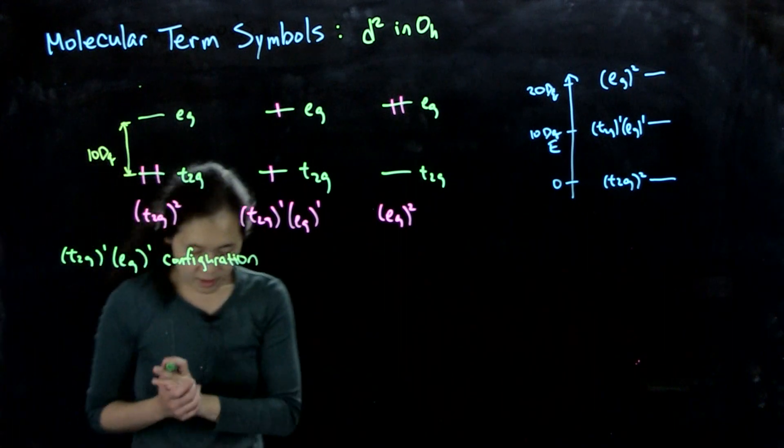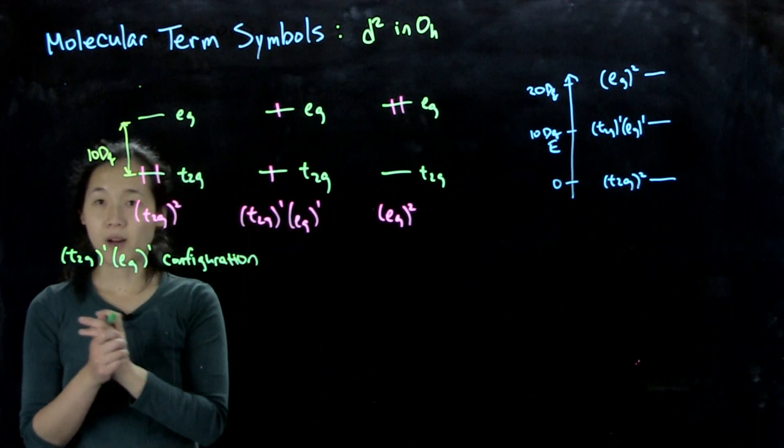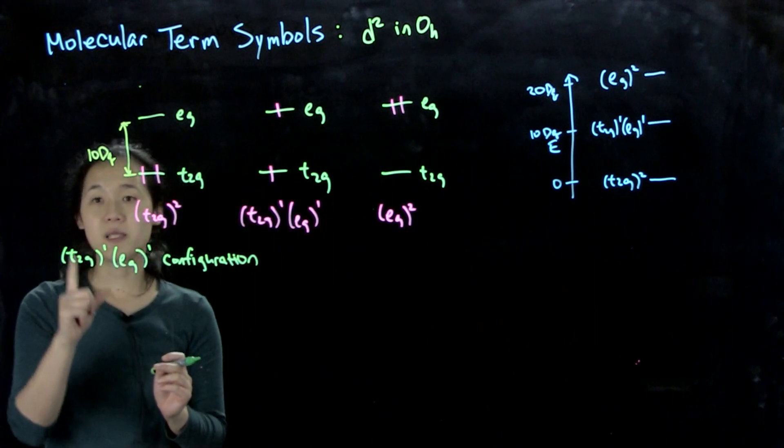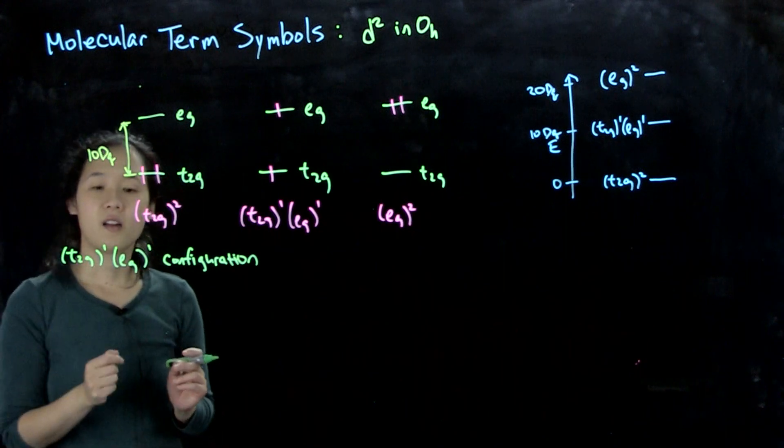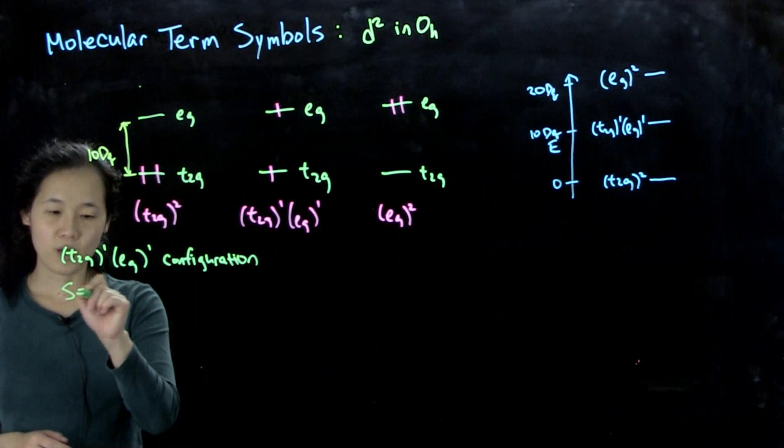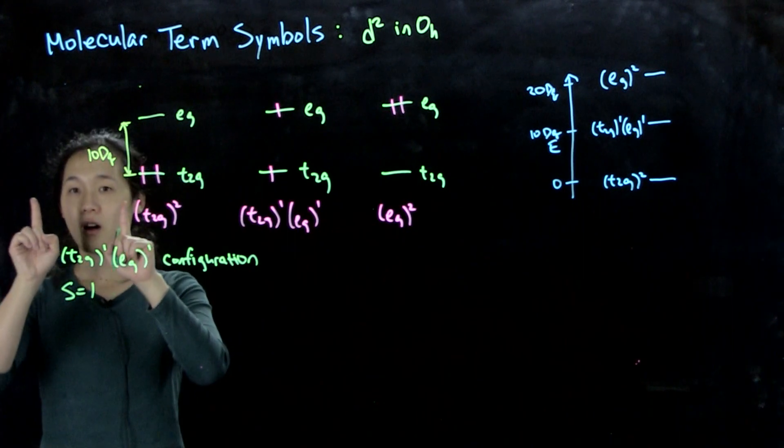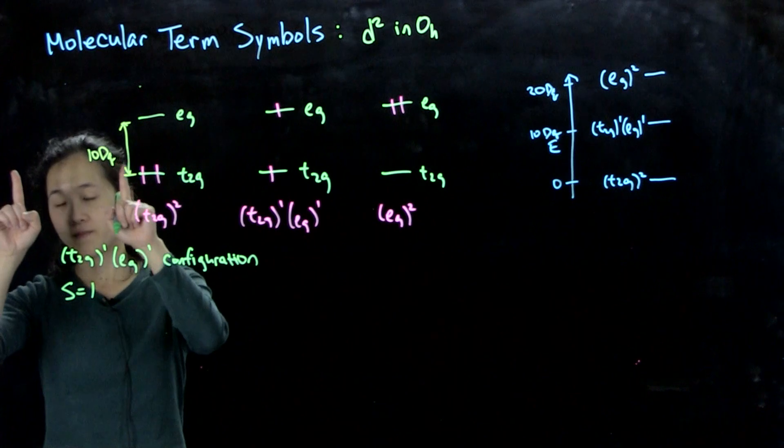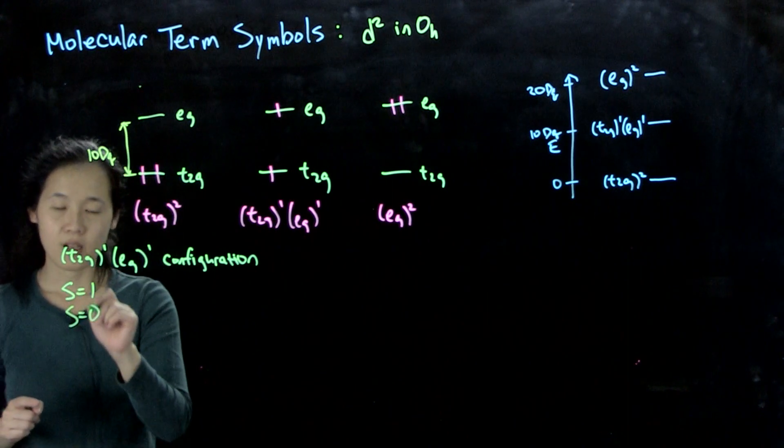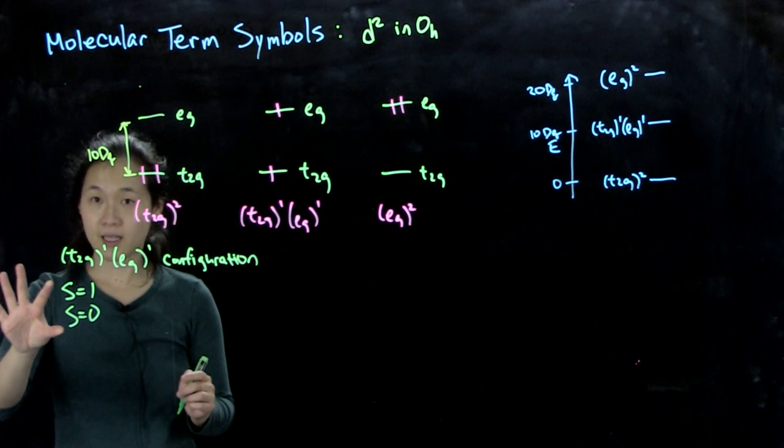So what we can do is we actually want to find the possible spins and the possible orbital symmetries. So for spins, we have two electrons. We could have s equals 1. So this would be both electrons are unpaired, so they're pointing in the same direction. Or we could have s equals 0 if one electron is up, one electron is down, and vice versa. So those are our possible spin states.